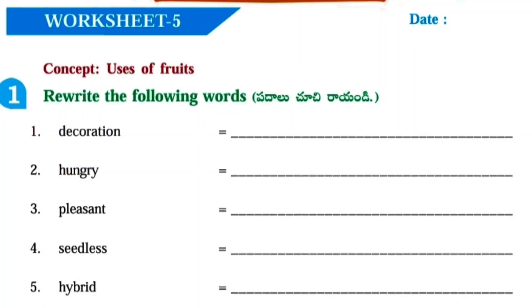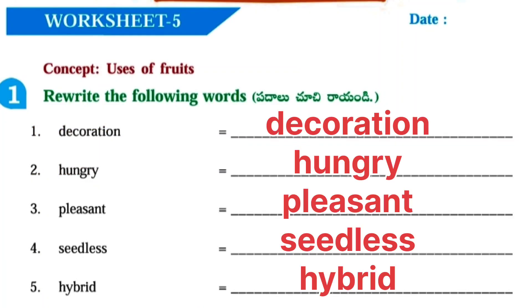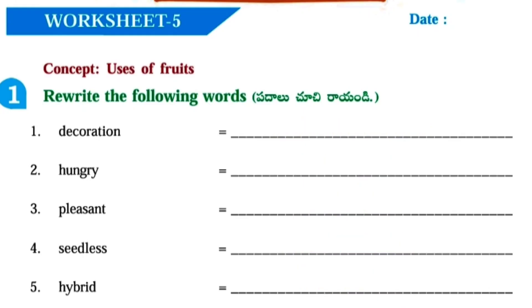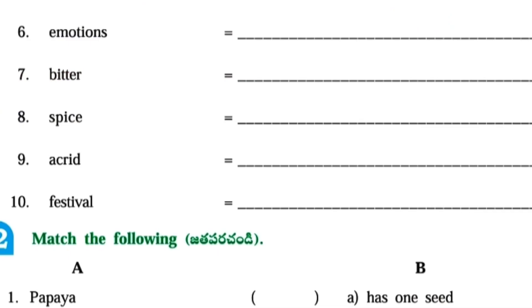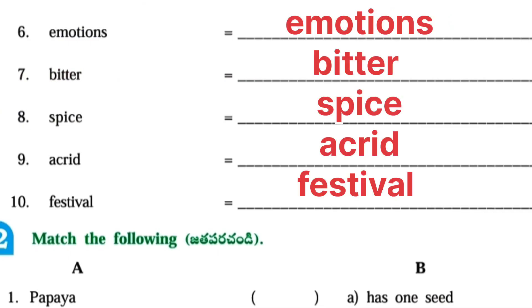Worksheet number 5. Concept: Uses of fruits. First one, rewrite the following words: Decoration, hungry, pleasant, seedless, hybrid, emotions, bitter, spice, acrid, festival.